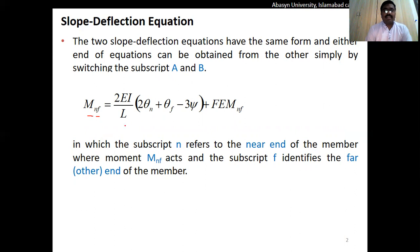Similarly, if we have a span from A to B, it becomes M_AB equals 2EI over L into (2 theta_A plus theta_B minus 3 psi) plus the fixed end moment in span A to B.